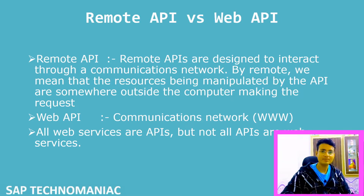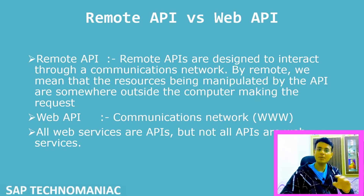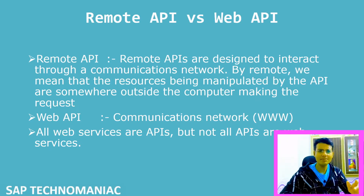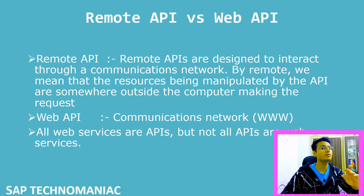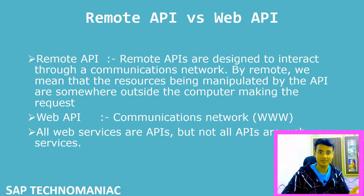Remote API and Web API. An API helps software communicate with each other by following some protocols or rules. A remote API is designed to interact through a communication network — any communication network. By remote API we mean the resource being manipulated by the API is somewhere outside our computer. It can be anywhere outside our computer. That means it can be in our local network also. If in our office a local network is created, we can manipulate data from our desktop to another desktop. Sometimes we do this using drive access — through the local network we can modify other drive data which is available in another system. That is what we call a remote API.